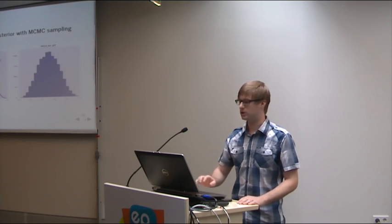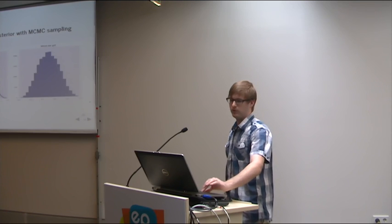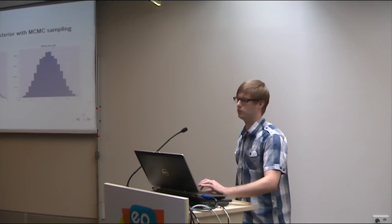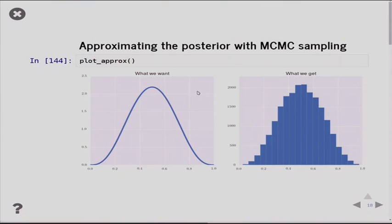So what does MCMC sampling look like? As we've seen before, this is the posterior that we want. This neat closed form solution, which we can't get in reality. So instead we're going to draw samples from that distribution. And if we have enough samples, we can do a histogram and then it'll start resembling what it is.